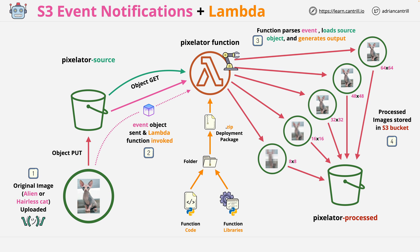We're going to configure S3 event notifications on an S3 bucket — we'll call this the source bucket. When any images get uploaded to this bucket, an event is generated and passed through to a Lambda function, which will gather all the data in that event object, load the original image, process it, generating five different pixelated versions, and put them into a processed bucket. We'll implement this step-by-step so you'll understand each individual component.